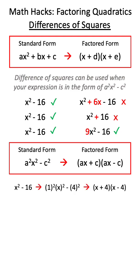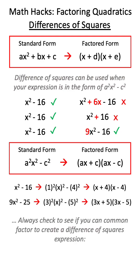For example, x squared minus 16 can be broken down like this. 9x squared minus 25 can be broken down like this.